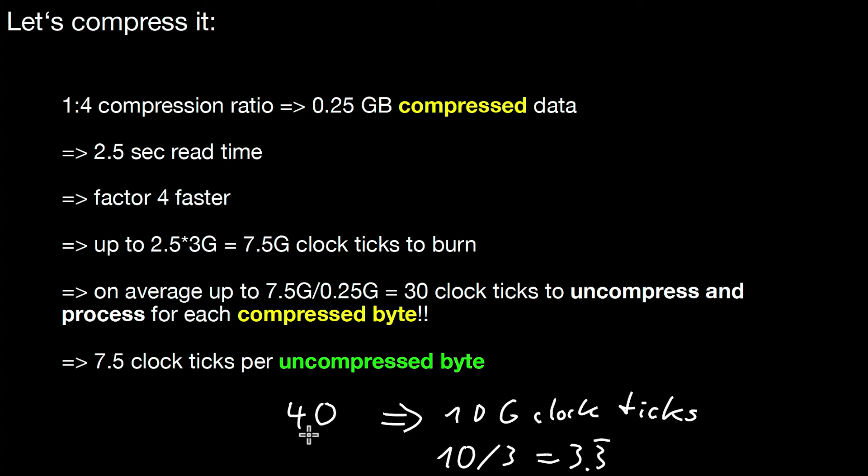It's important to pick the compression method in the right way so you're not overloading the CPU and slowing down the I/O operation. We want to design or pick the right compression method such that I/O becomes faster. This does not only apply for reading data from disk — it also applies in main memory.